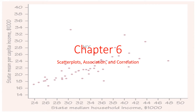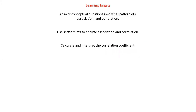A lot of it is stuff that you've probably seen before, although things like correlation get a little bit dicey sometimes. We have a couple learning targets: answer conceptual questions involving scatter plots, association, and correlation; use scatter plots to analyze association and correlation; and calculate and interpret the correlation coefficient.